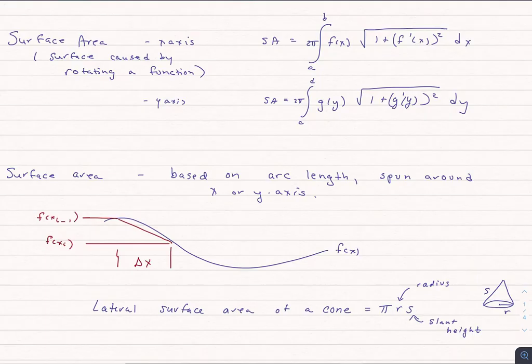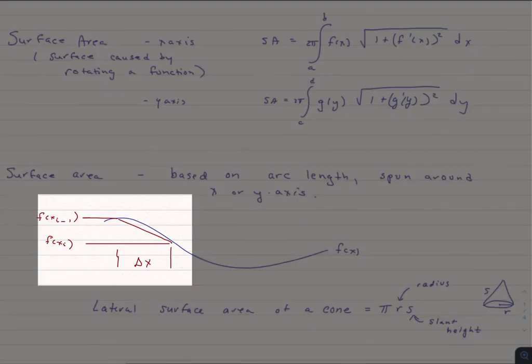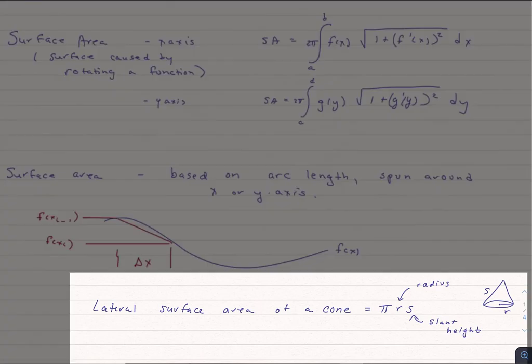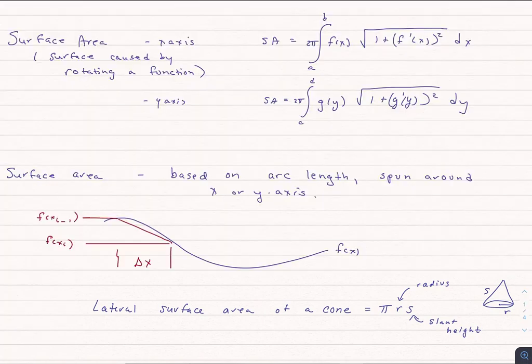So if we took our function and looked at it at a delta x, and we looked at x of i minus 1 and x of i, we would have both a change in f and a change in x. Although you might not remember it, there is a formula for the lateral surface area of a cone that is pi times r the radius times the slant height. And the slant height is basically if you were an ant crawling up that cone, it's the distance you would travel.